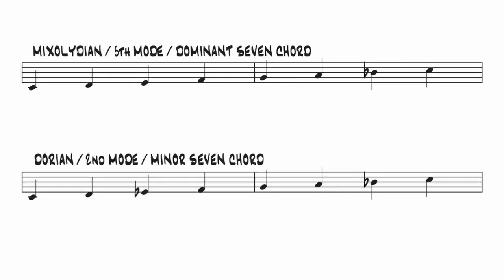The next mode would be Dorian. You start with the Mixolydian and then lower the 3rd as well as the 7th. The Dorian scale produces a minor 7 chord — 1, flat 3, 5, and flat 7 — built on the second degree of the major scale. Actually, three of the modes produce minor 7 chords, but the other two, Aeolian and Phrygian, contain alterations other than just the flat 3 and the flat 7.